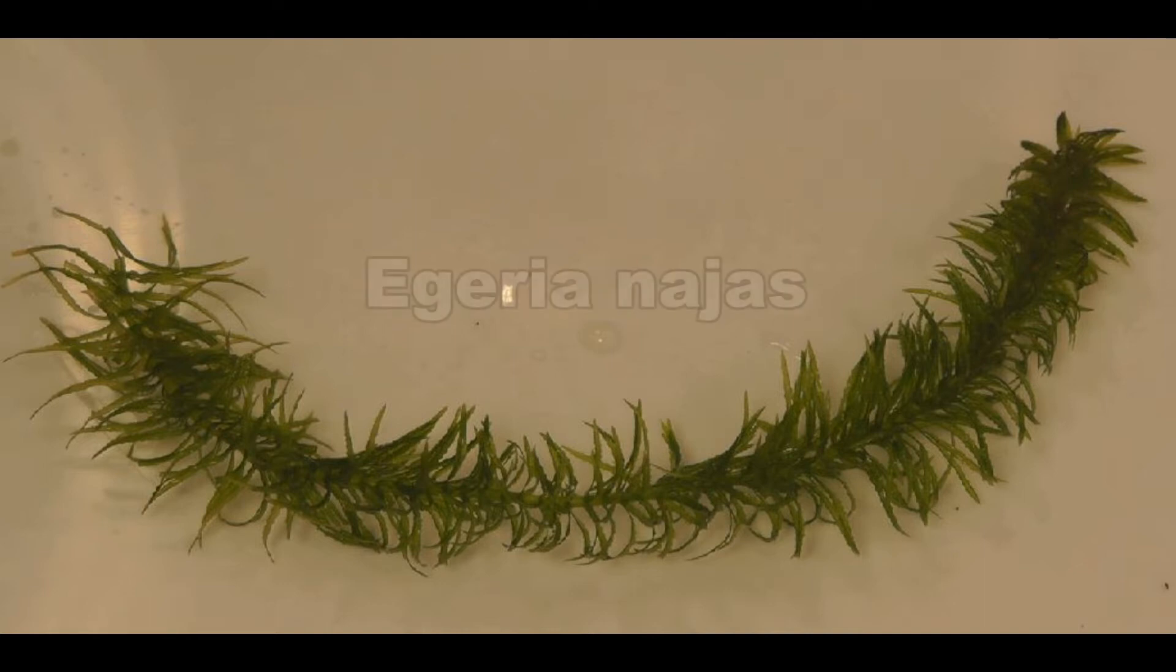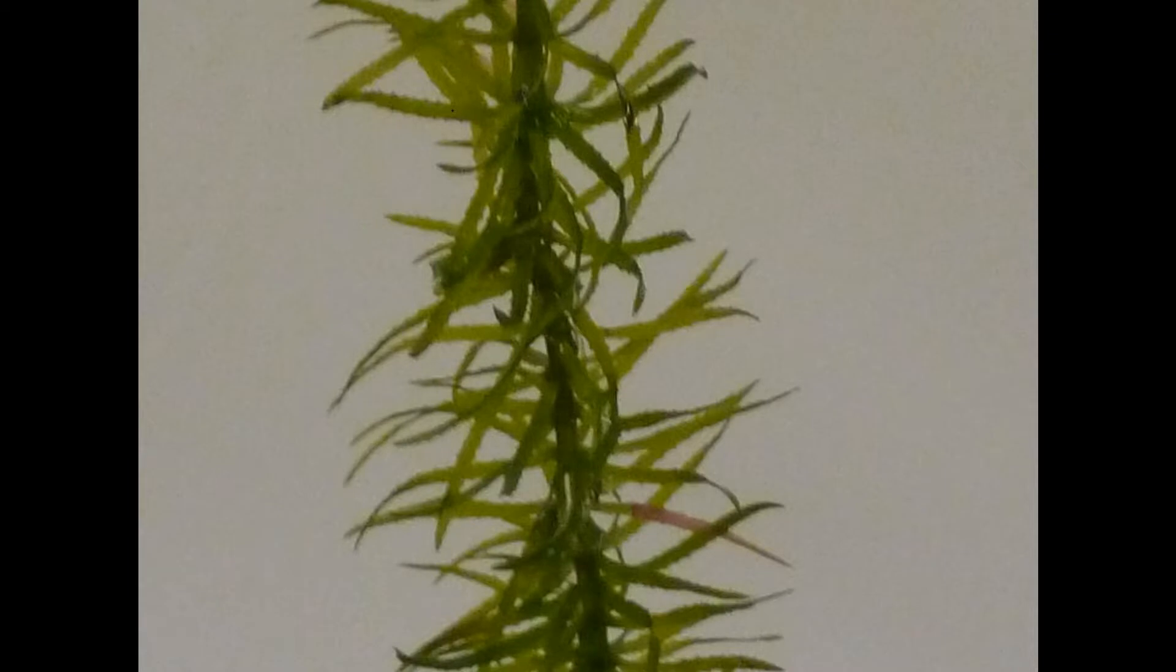At CLEAPSS we are currently using this aquatic plant in photosynthesis experiments. This aquatic plant is native to South America and is called Egeria najas. Egeria najas has narrow serrated leaves and a sturdy stem.